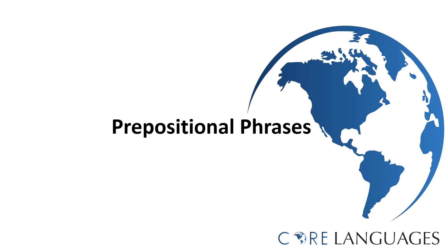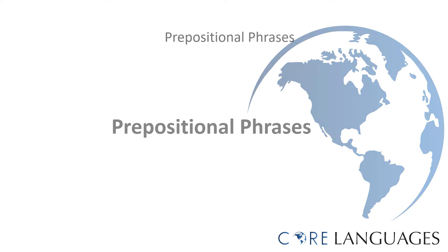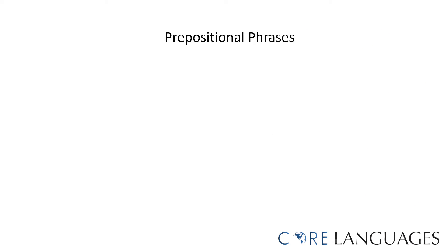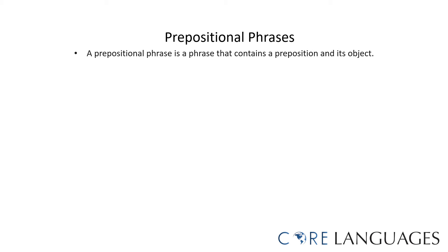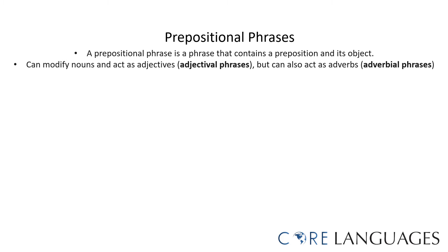A prepositional phrase is a phrase that contains a preposition and its object. A prepositional phrase can be used to modify a noun, in which case it acts as an adjective and is referred to as an adjectival phrase. But a prepositional phrase can also act as an adverb, in which case it is referred to as an adverbial phrase.